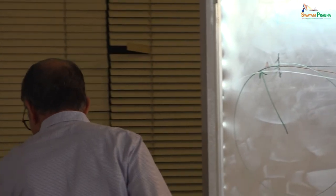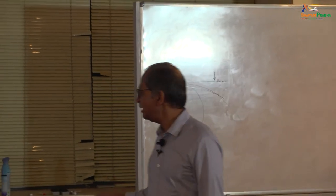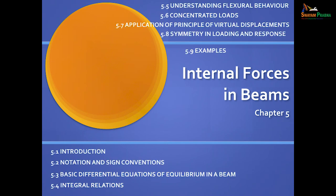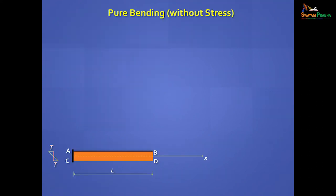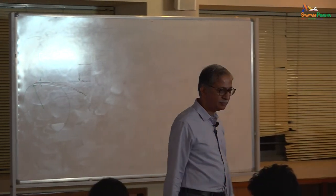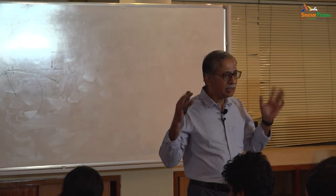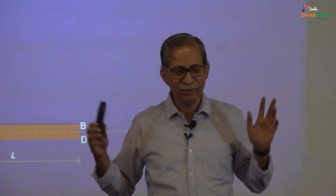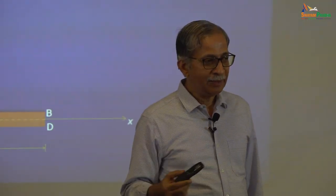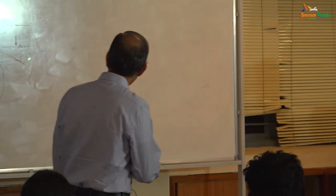So that is how you connect right brain visualization to left brain analysis. Now consider: can you have curvature without bending moment? Just as you can have axial strain without axial stress — for example, thermal loading on a frictionless surface causes thermal strain but no stress — similarly, give an example of a beam where you have curvature but no bending moment. Think about it for the cantilever example.